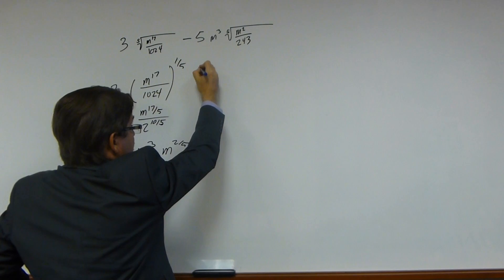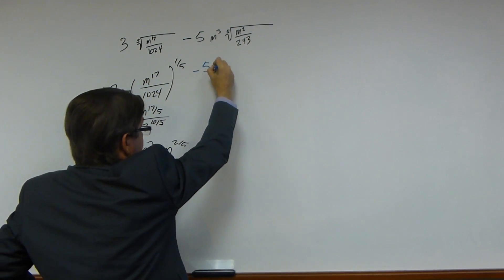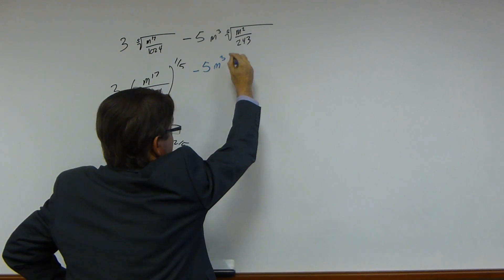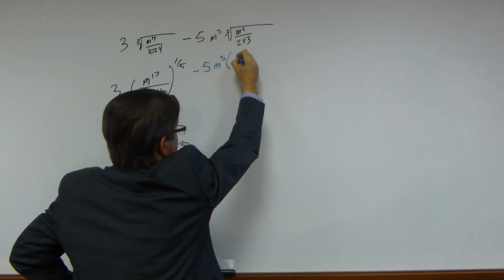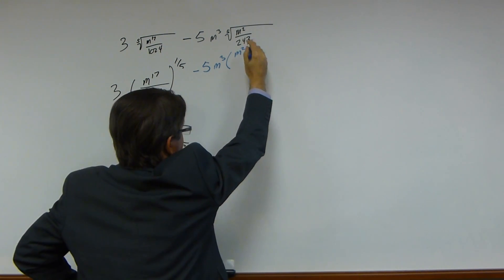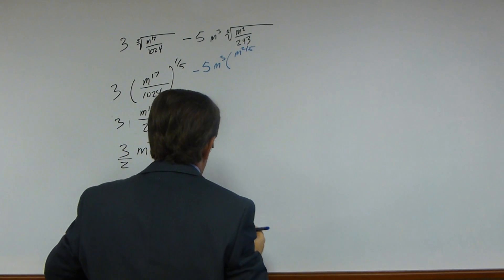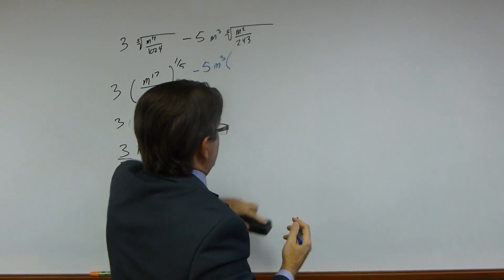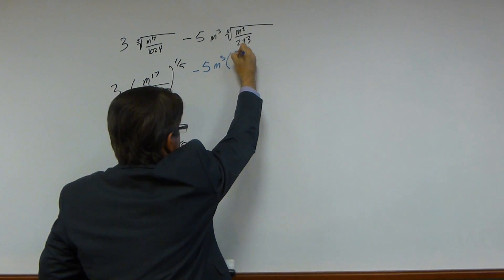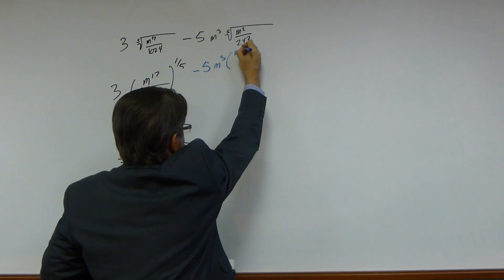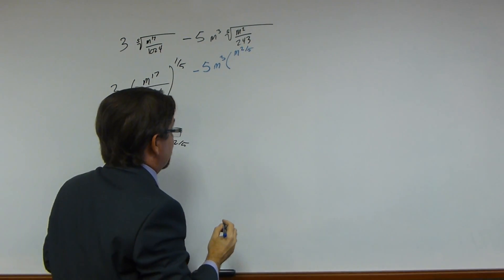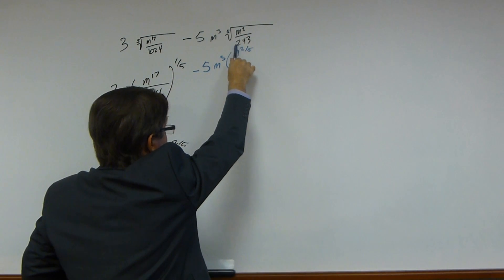I'll switch marker colors so we don't confuse this column. We have minus 5, m to the 3rd. Let's rewrite this. m to the 2 fifths. Boy, that looks sloppy, doesn't it? With math, it is important to be clear what you're doing. You get sloppy, it is going to bite you in the buttocks. I speak from experience.